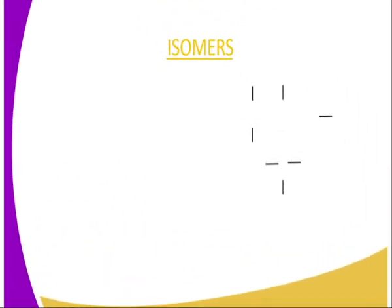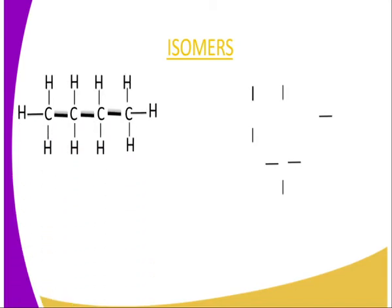What is an isomer? For us to understand that, let's look at the following diagram with reference to a member of alkanes — number four, butane, having four carbon atoms. The four carbon atoms are bonded covalently to hydrogen atoms, giving us the first kind of structure we can draw: four carbon atoms bonded covalently to ten hydrogen atoms.